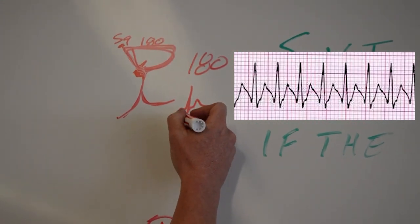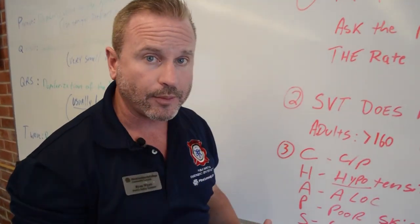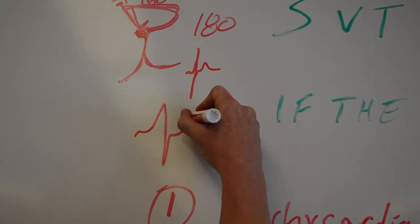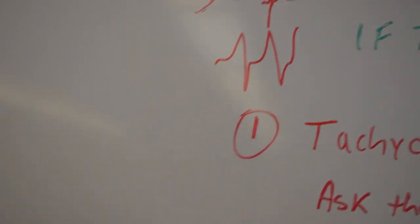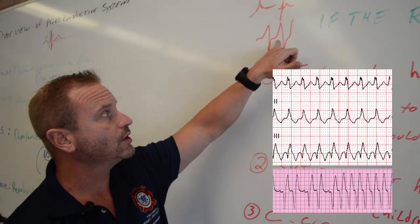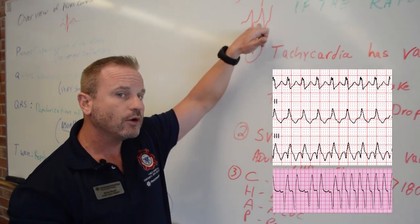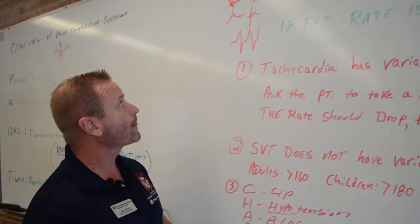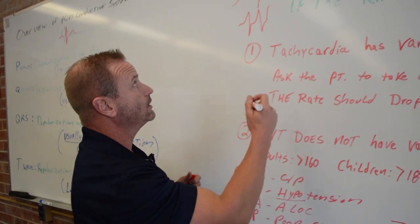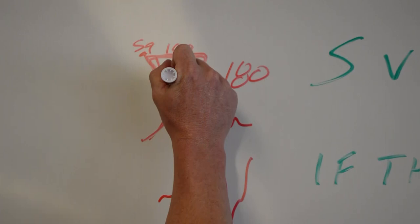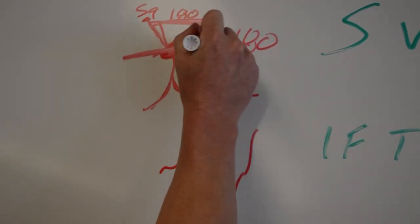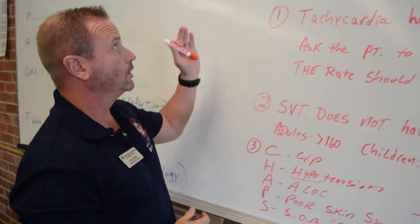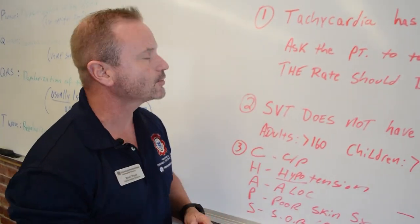You can get a wide complex SVT — what we call SVT with aberrancy — and it almost looks like a VTAC. This can confuse many medics in the field, but the primary treatment is still adenosine. The whole goal is to slow this down. Adenosine is the most potent AV nodal blocking drug we have on the ambulance. It goes into the AV node and blocks the impulse from conducting. People think of adenosine as rebooting the heart. Common side effects include pain and transient asystole — but I've never had a patient code from giving adenosine.